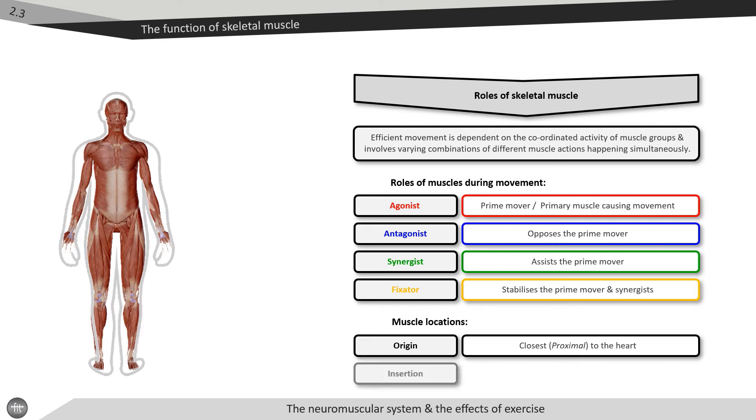An origin is always the point proximal or closest to the heart, which is typically the anchor point. Some muscles may have multiple origins.